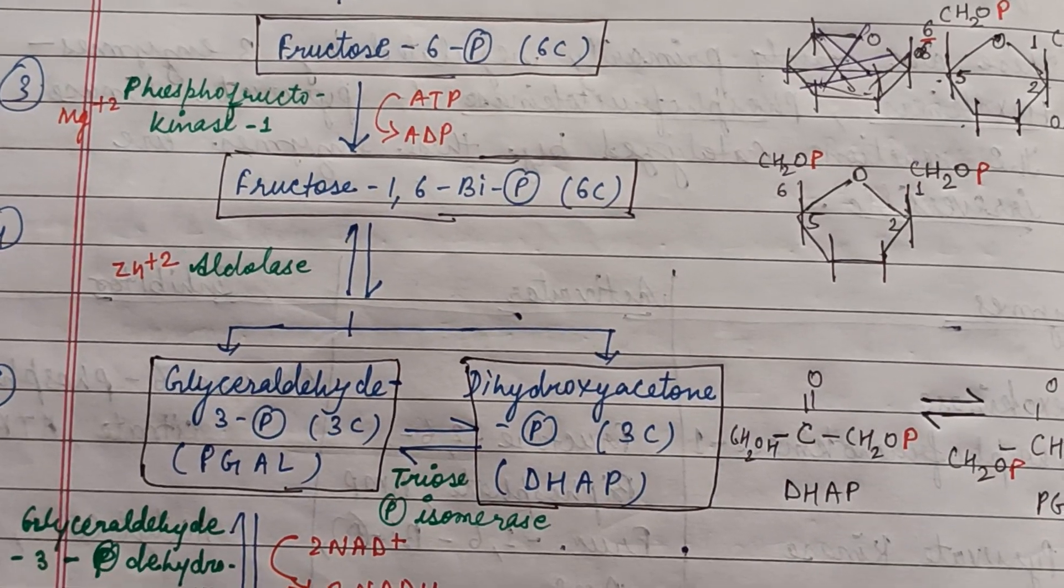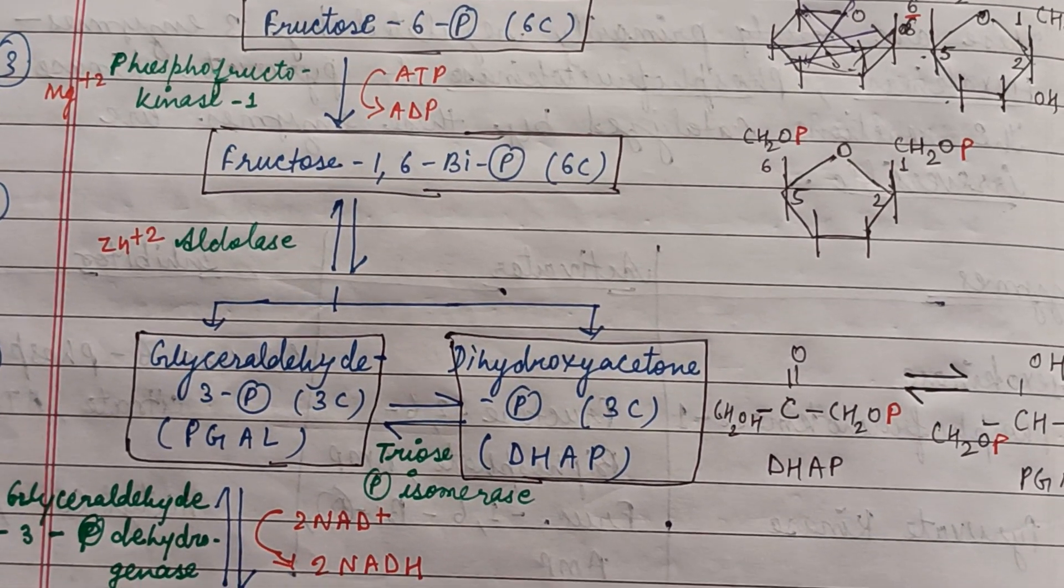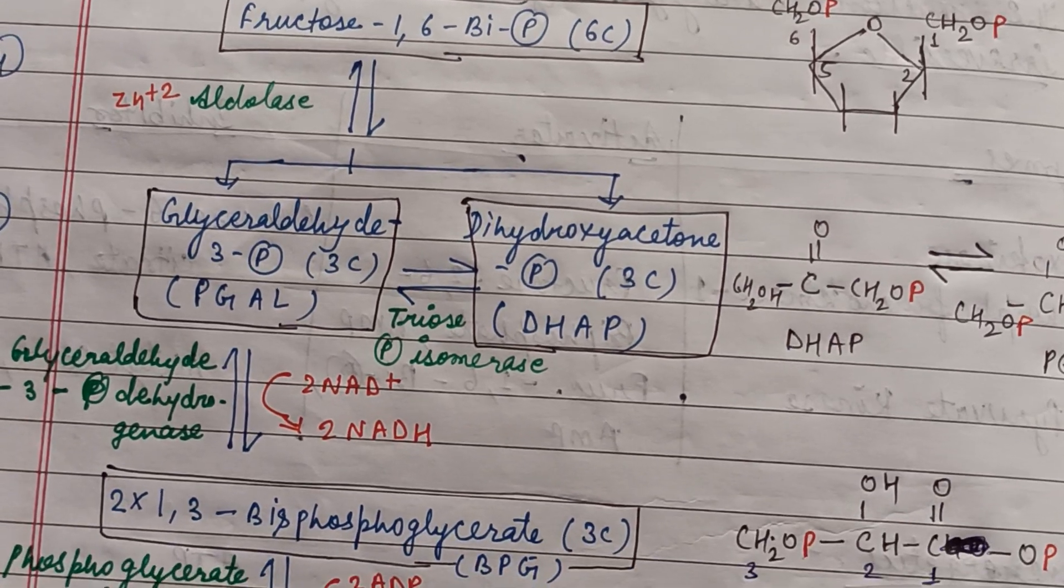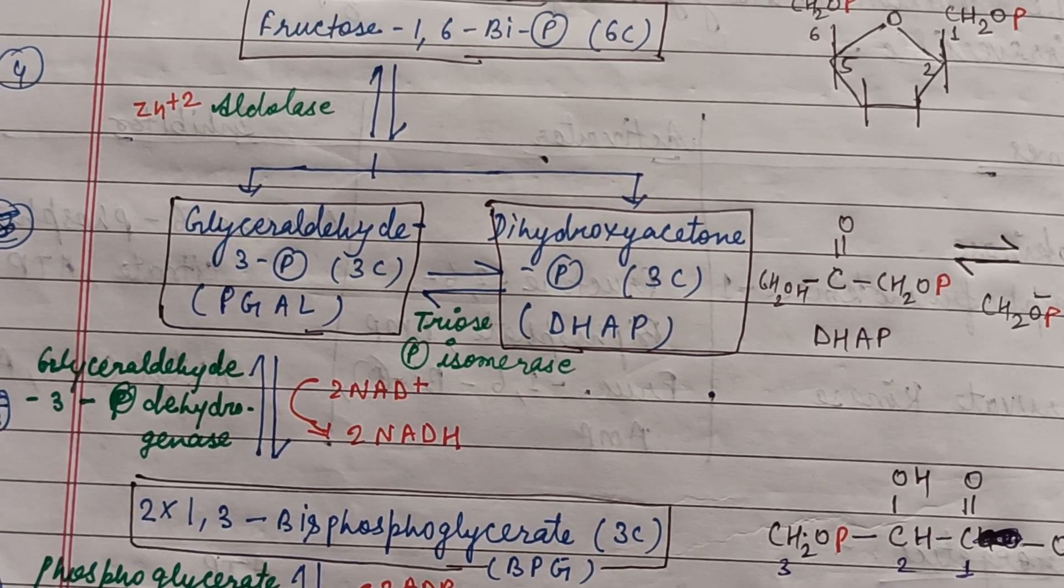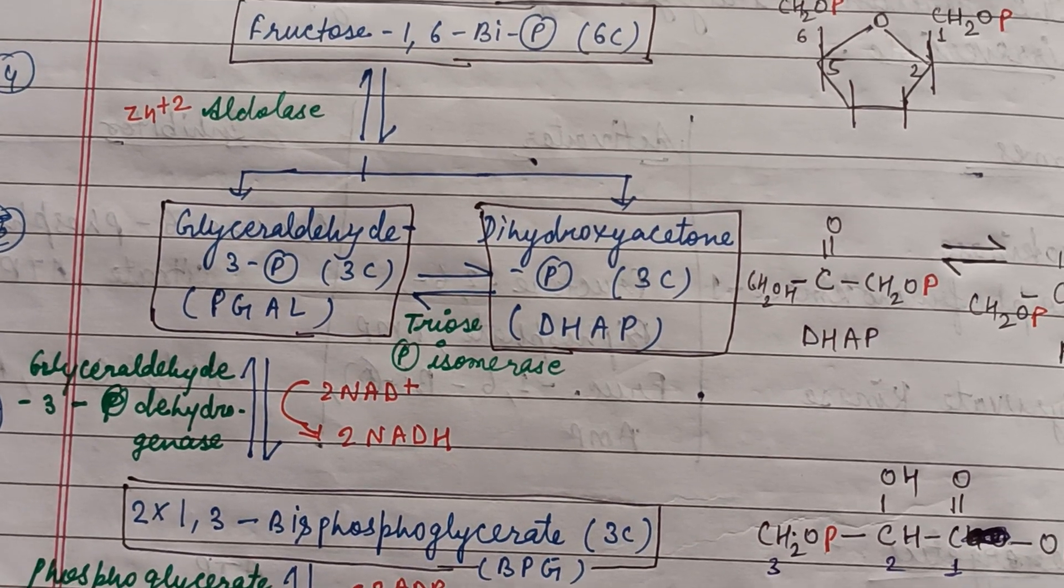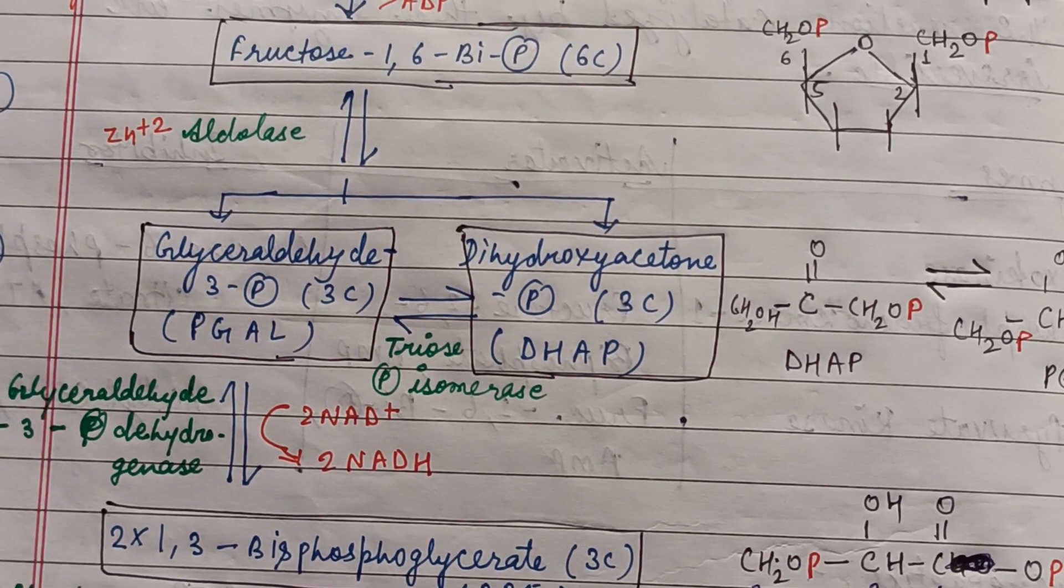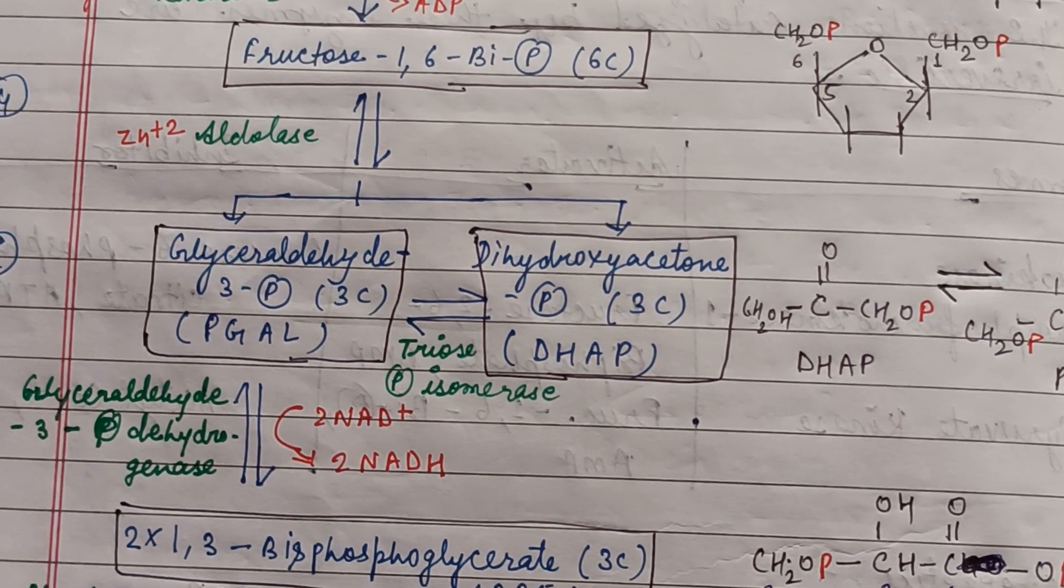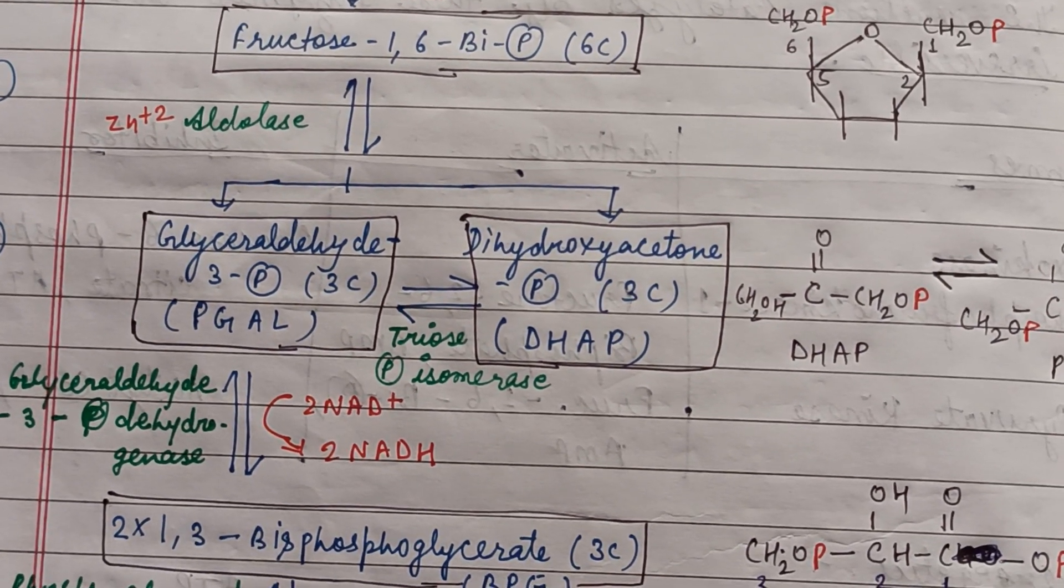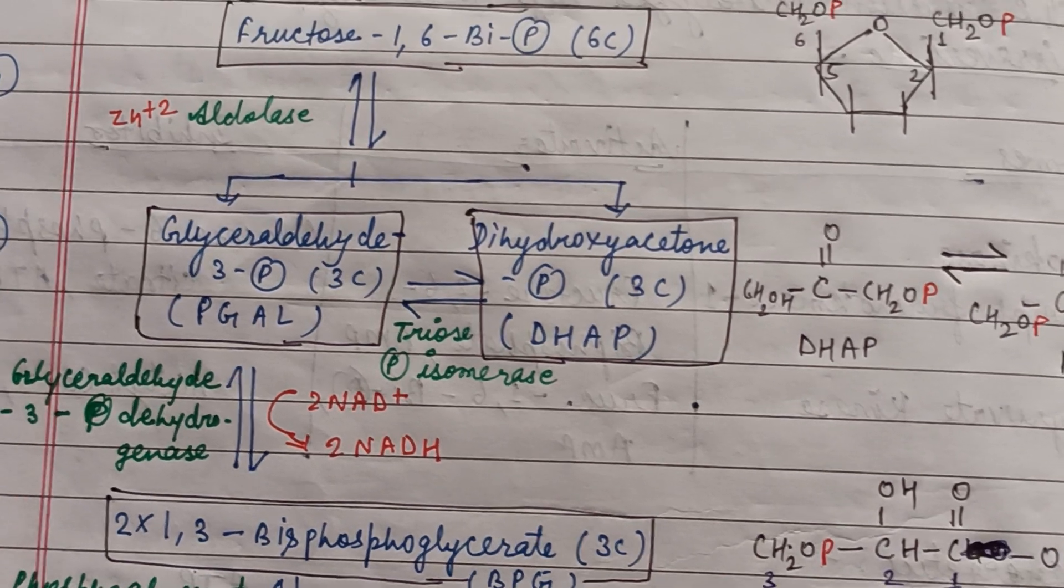Fructose 6-phosphate is further converted into fructose 1,6-bisphosphate and then it splits into two pathways: PGAL and DHAP, phosphoglyceraldehyde and dihydroxyacetone phosphate. The DHAP is immediately converted into PGAL.